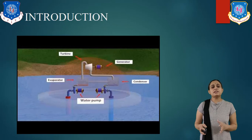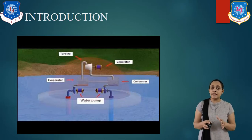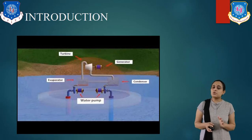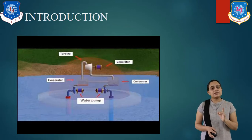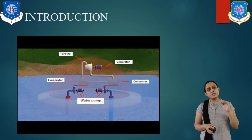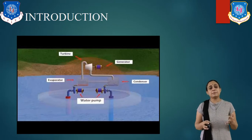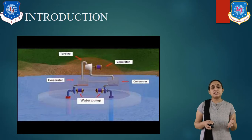Ocean thermal energy conversion method is an indirect method of using solar energy. The seawater system acts as a collector system for solar heat. The upper layer of the sea water warms more quickly than the lower level, and the difference in temperature is nearly 20 to 25 degrees centigrade.